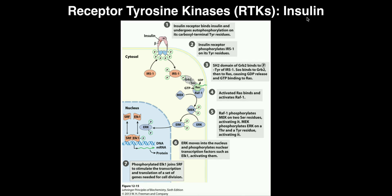One common feature of RTKs is that the molecules that bind to them are almost always growth factors. For example, epidermal growth factor binds via a receptor tyrosine kinase, and insulin-like growth factor also binds via the same receptor. Most of the downstream proteins in the pathway are shared.